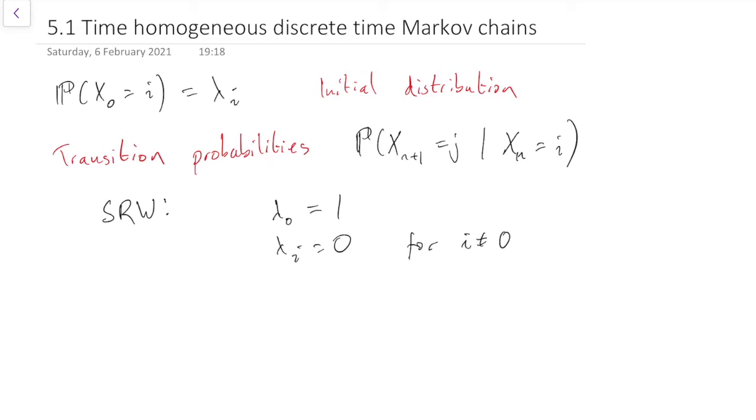And the transition probabilities for the simple random walk, xn plus 1 equals j, given xn equals i. Well, if j is equal to i plus 1, that would mean we would be moving up a step. And so you should remember that that has probability p.